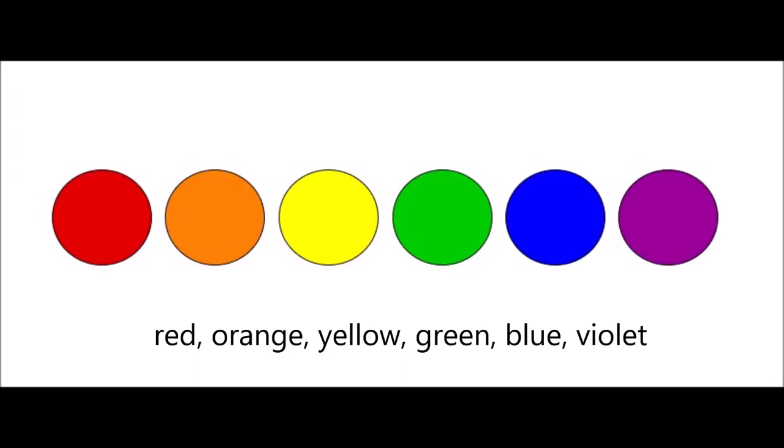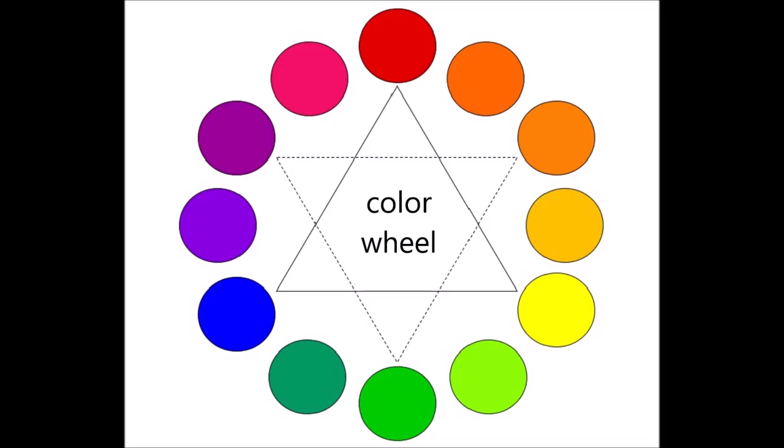This foundation begins with the color spectrum. The color spectrum is the natural order of colors: red, orange, yellow, green, blue, and violet. Color also has a circular order, called a color wheel.